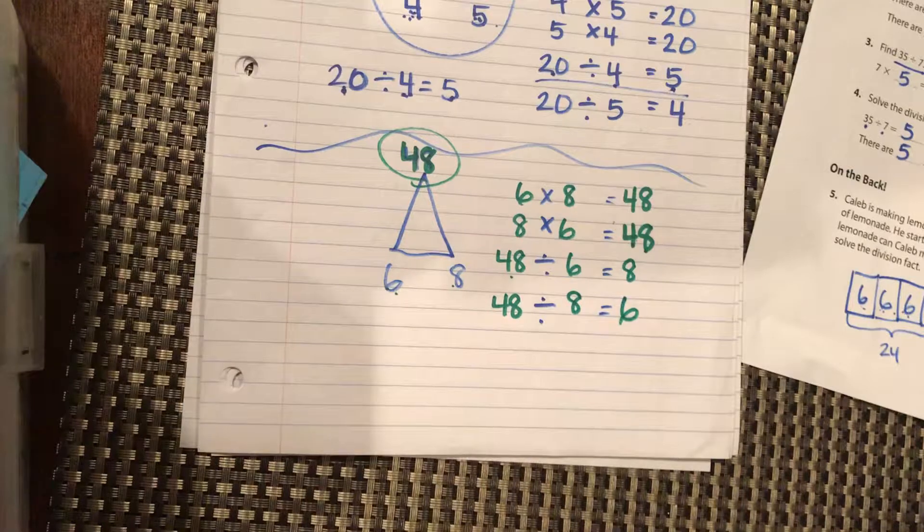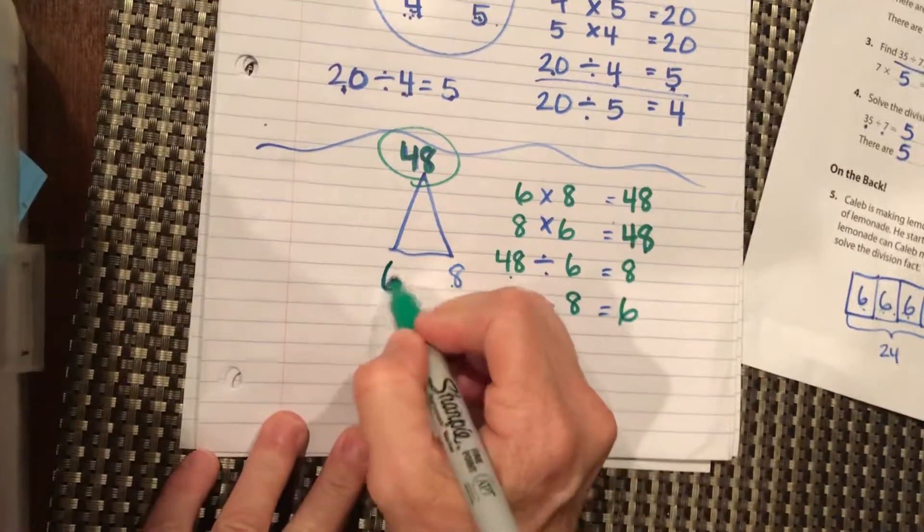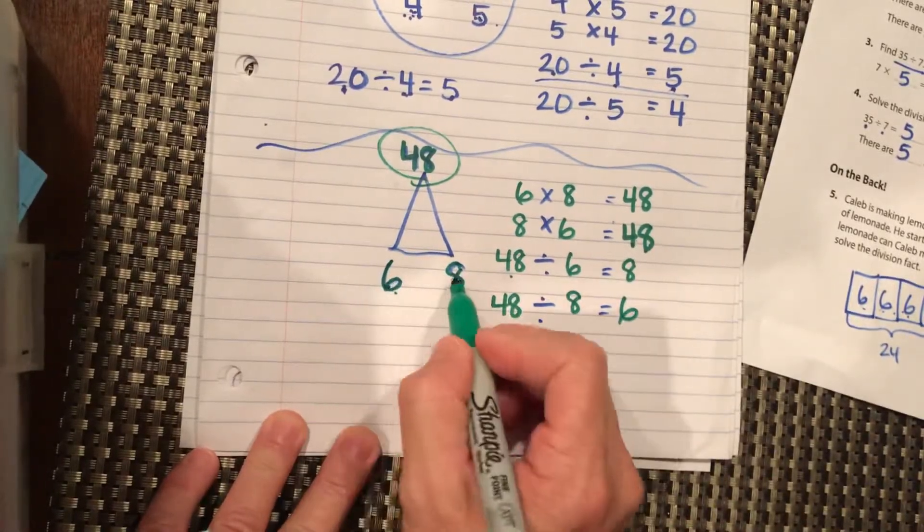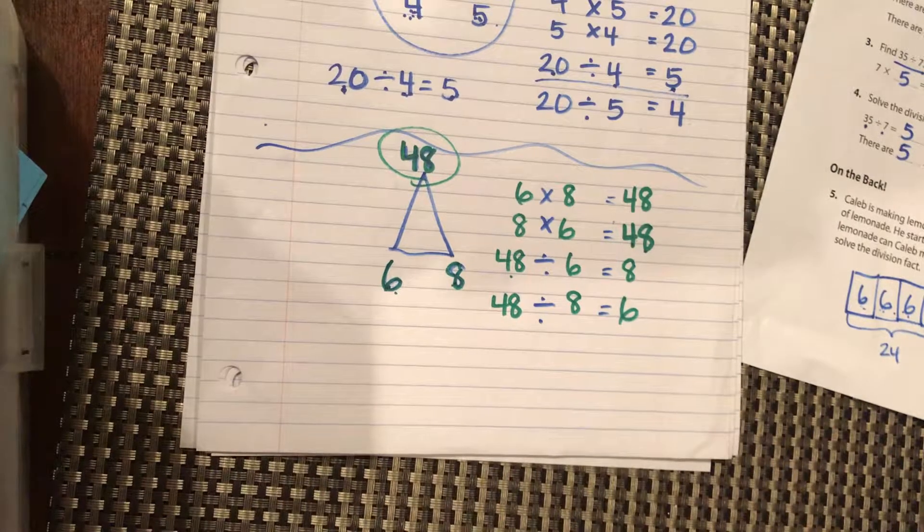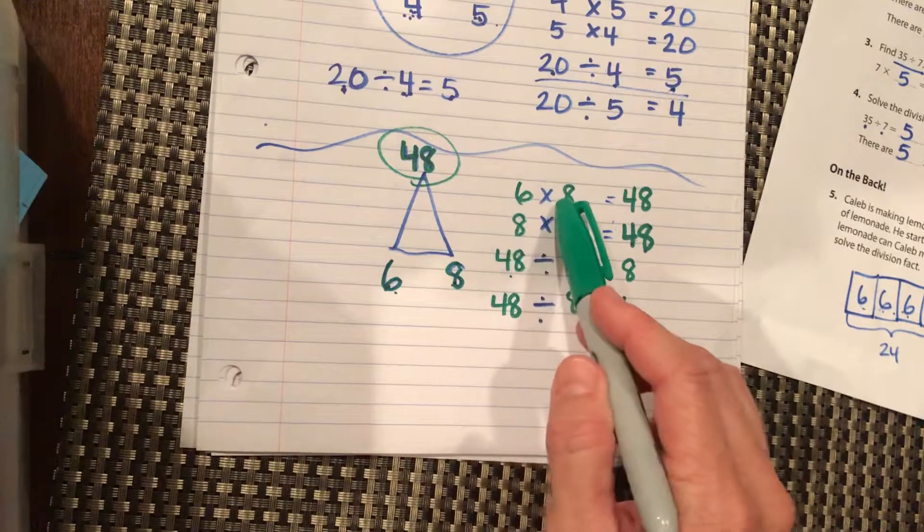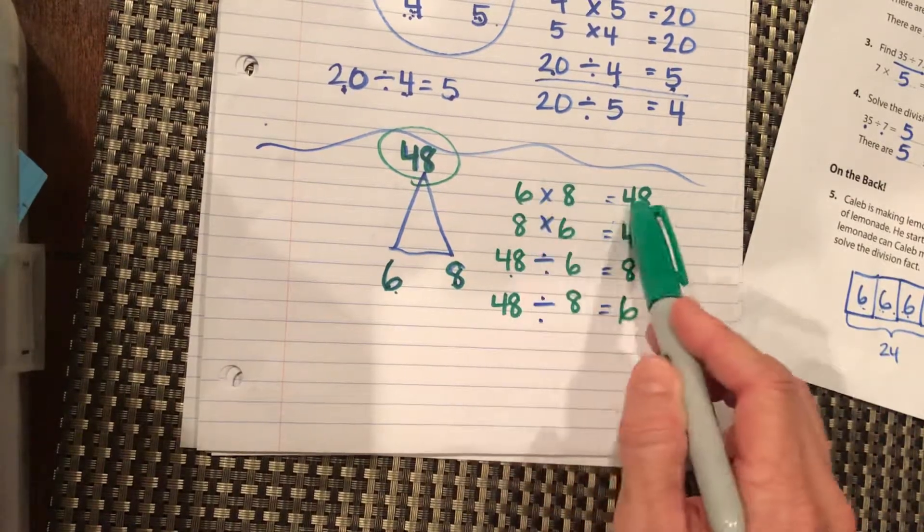When you have a fact family, those are the only three numbers to get to come to dinner: 6, 8, and 48. If 7 comes knocking on the door, they have to say, I'm sorry, you can't come to dinner right now. It's just a party of 6, 8, and 48.